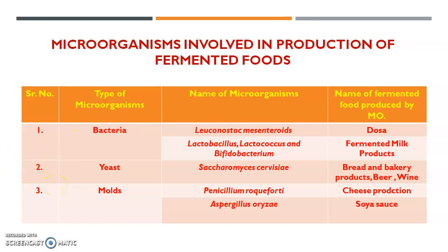Among bacteria, Leuconostoc mesenteroides is used for the production of the fermented food product dosa. Lactobacillus, Lactococcus, and Bifidobacterium are used for the production of fermented milk products. The yeast Saccharomyces cerevisiae is used to produce bread, bakery products, beer, and wine. Among molds, Penicillium roquefortii is used to produce cheese, and Aspergillus oryzae is used to produce soy sauce.